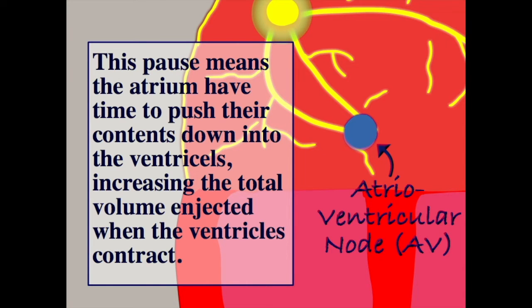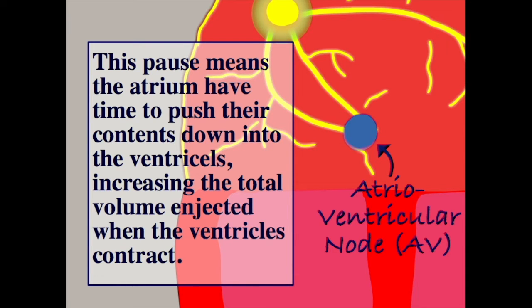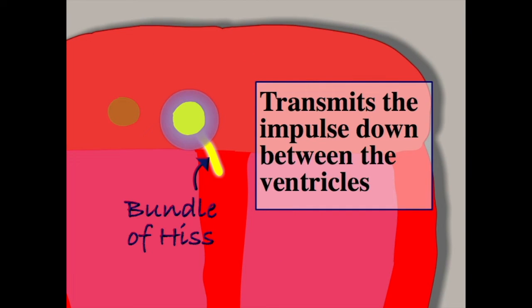Without the AV node, the atrium and ventricles would contract nearly simultaneously, resulting in less blood in the ventricles on contraction, reducing cardiac output. The AV node conducts the electricity down to another part of the heart's conduction system known as the bundle of His, which sits between the two ventricular chambers.